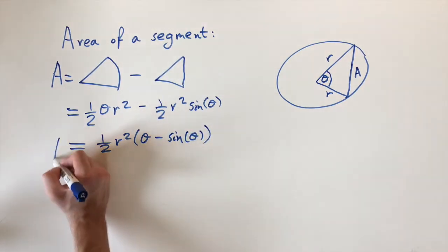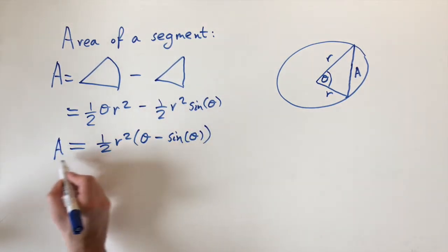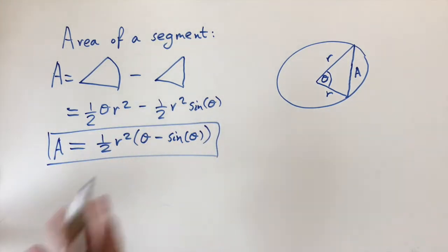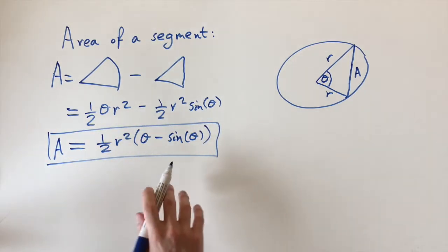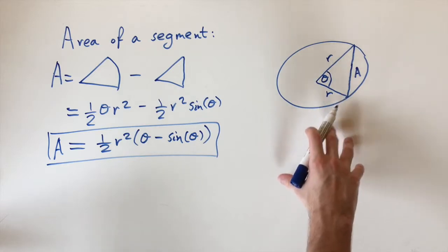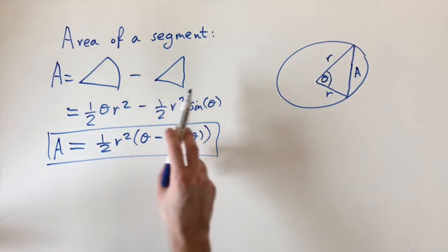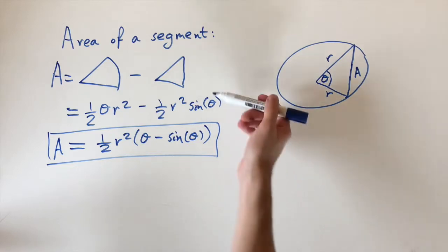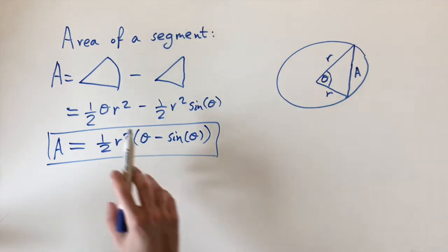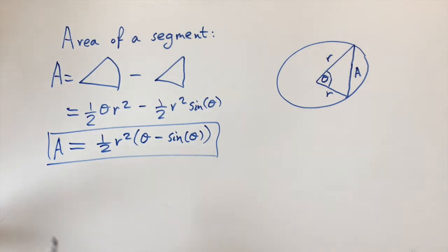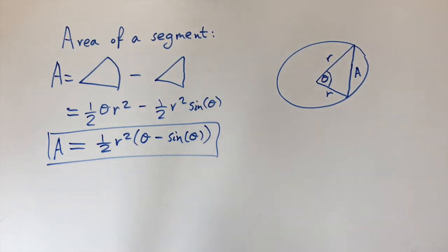This is the formula for the area of a segment. I wouldn't advise you to memorize this — what's more important is understanding how to get here. If you remember the formulas for the area of a sector and the area of a triangle, you can always derive it. So now let's look at a few examples to see how this works.